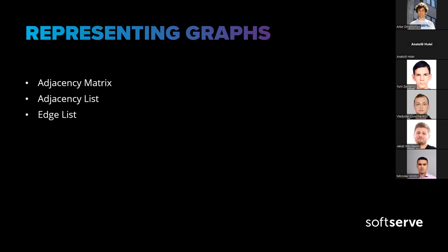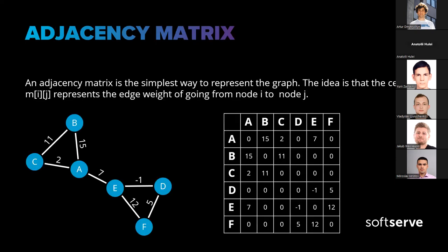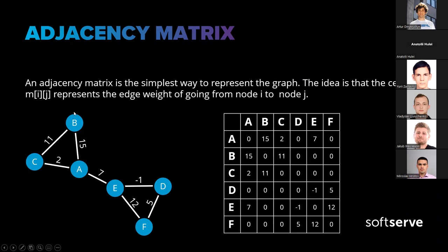Now let's look at ways to represent a graph using different structures. There are three types: adjacency matrix, adjacency list, and edge list. The adjacency matrix is the simplest way to represent a graph. The idea is that cell (i, j) represents the edge weight of going from node i to node j. Here we can see an undirected graph and the adjacency matrix that represents it. Since it's undirected, edges have two directions — for example, from A to B is 15, and from B to A is also 15.